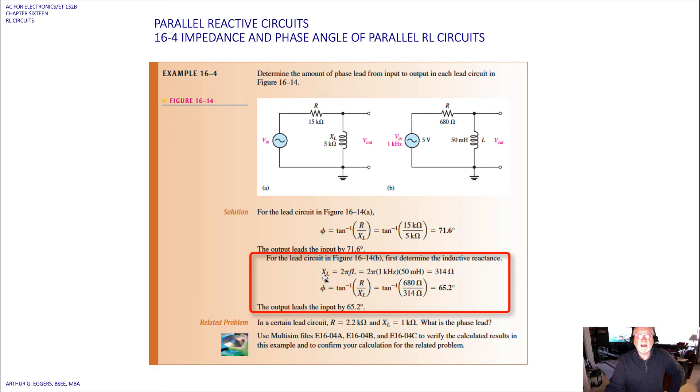And when we do that with the 50 millihenry value, we get 314 ohms of reactance. Calculate for phi this time, 680 over 314 gives us an angle of 65.2. So the output leads the input by 65.2.